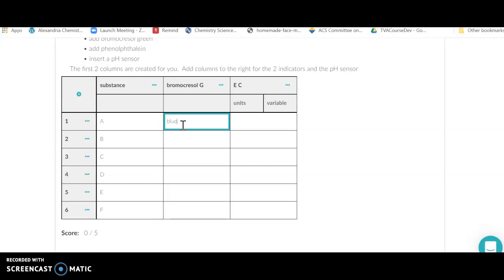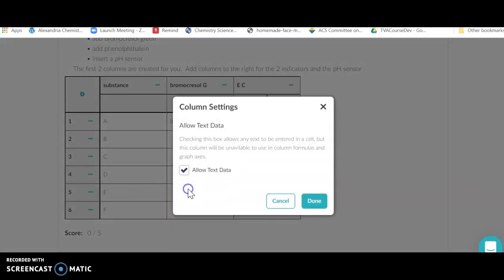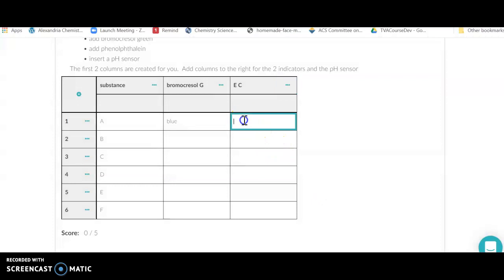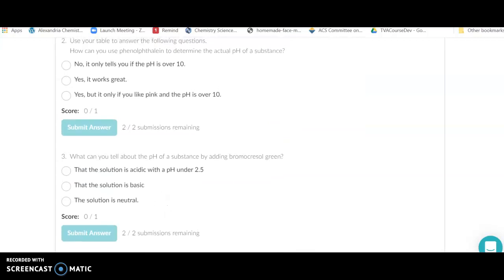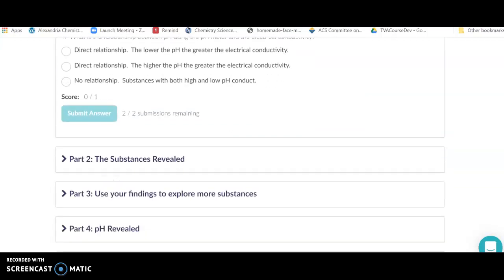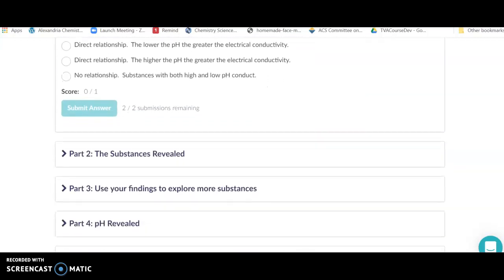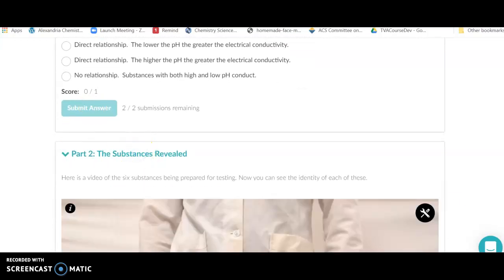Once you have done that, you don't just have to use numbers. You can put words in here, so I can put blue and continue going down. If I get to the electrical conductivity and I want to say that I have yes or no, I can put text as well as numbers here in these columns. When you need more columns, just continue to add columns to the right.